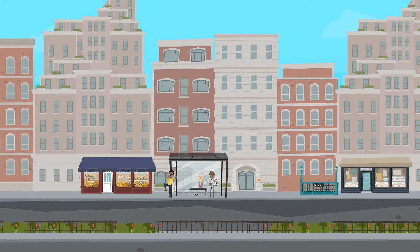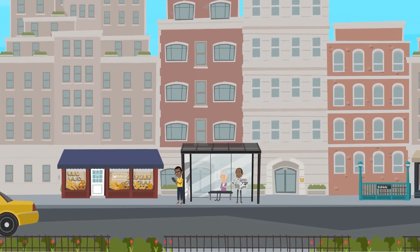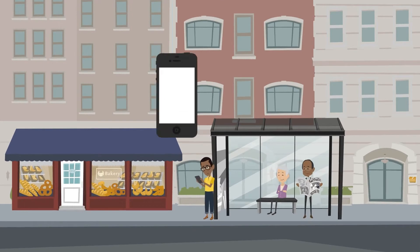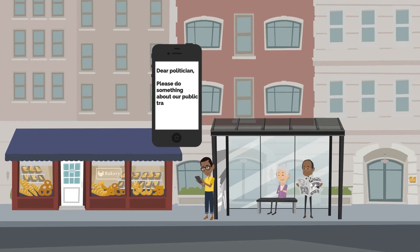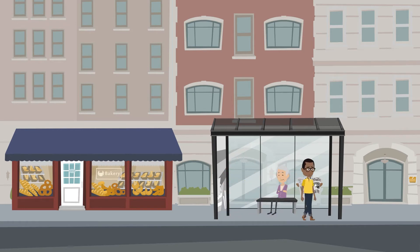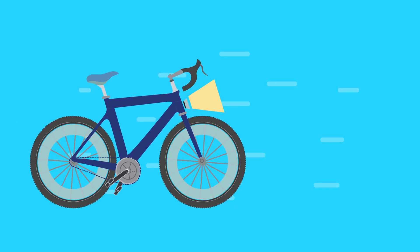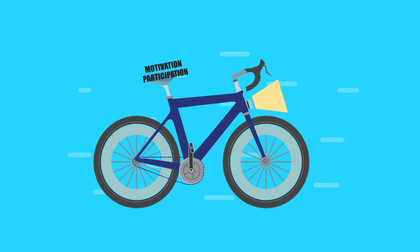For example, in areas where the infrastructure does not support biking or taking a bus, such actions are hard to take. In that case, one meaningful action could be to contact local politicians to do something about the issue. Though a bike will not run without someone pedaling it, a seat is also needed to make the ride more comfortable and motivating.